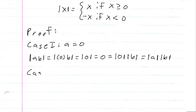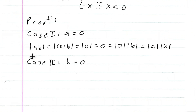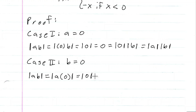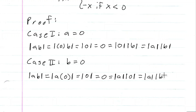Case two: b is zero, and it's the same argument as above. We have the absolute value of ab equal to the absolute value of a times zero, which is equal to the absolute value of zero, which is zero, which equals the absolute value of a times the absolute value of zero, which equals the absolute value of a times the absolute value of b.